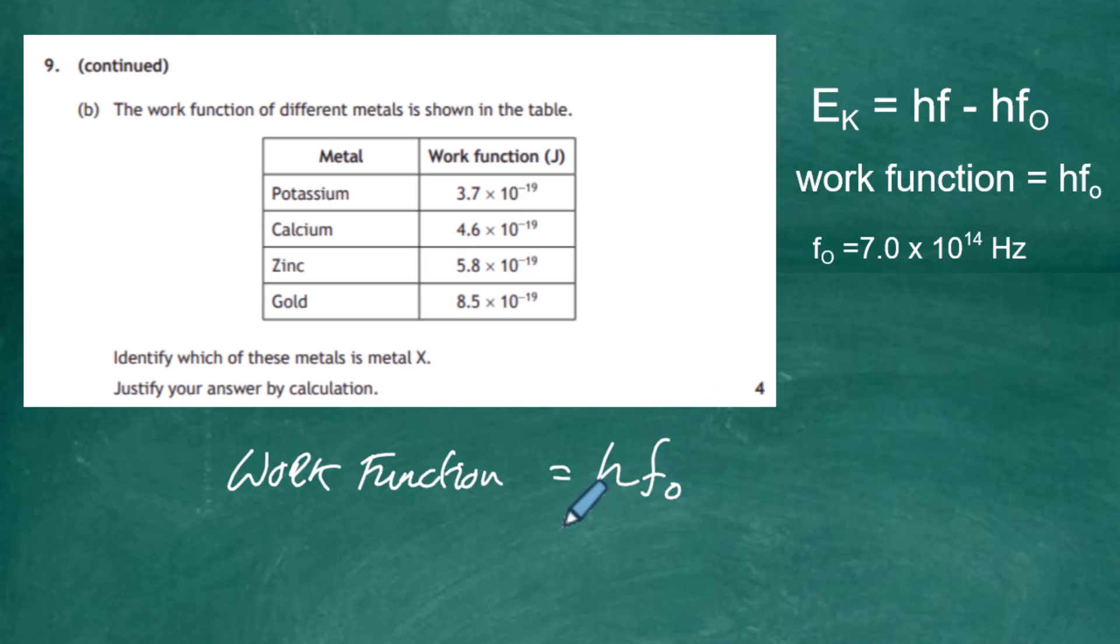h is Planck's constant, 6.63 × 10⁻³⁴ joule-seconds, and the threshold frequency is 7 × 10¹⁴ Hz. A hertz is equal to a second to the minus one, so the seconds cancel out and you're left with joules.